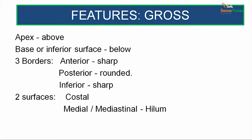Coming to talk of the gross anatomy, the lung has an apex which is located above, the base or inferior surface which is below, and there are three borders: a sharp anterior border, a rounded posterior border, and a sharp inferior border. The surfaces are the costal and the mediastinal surface.